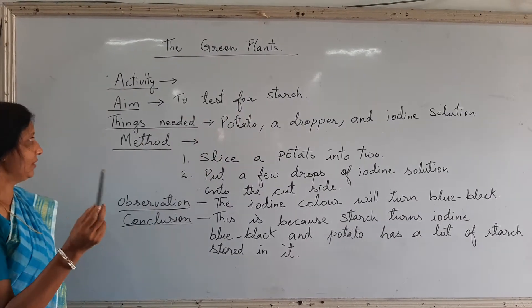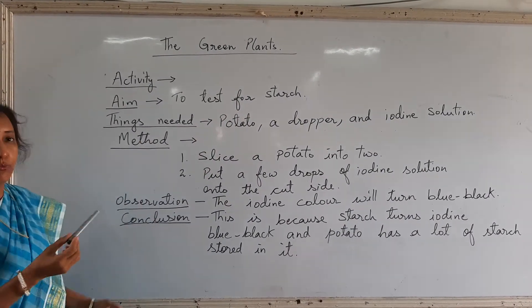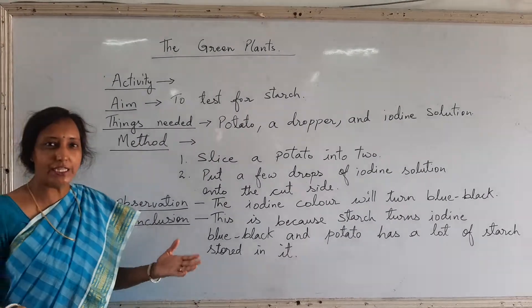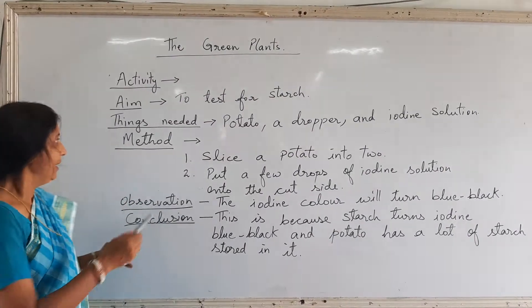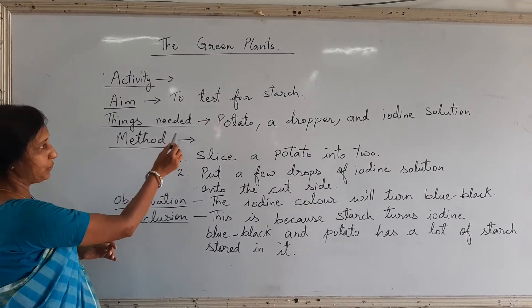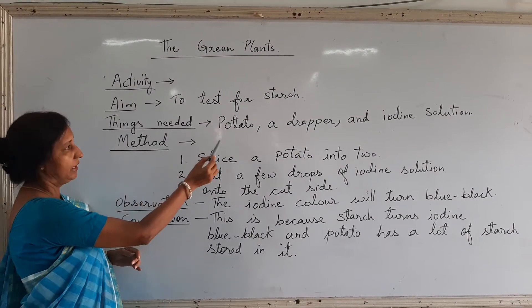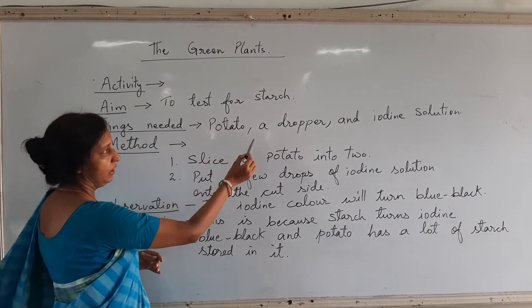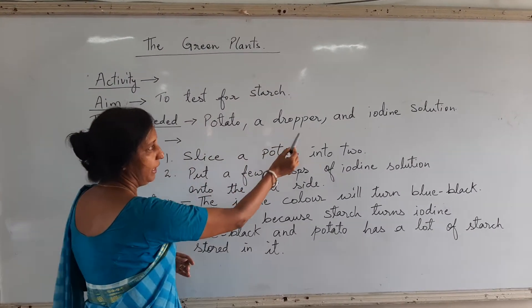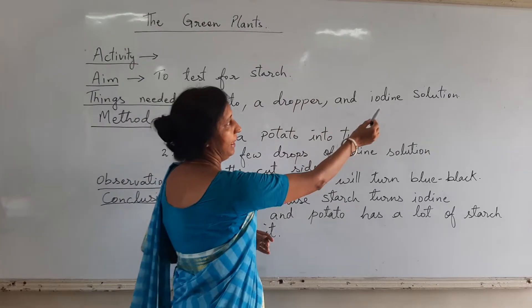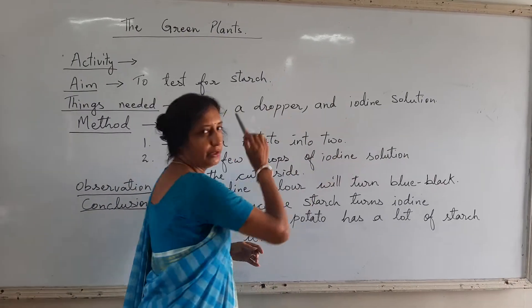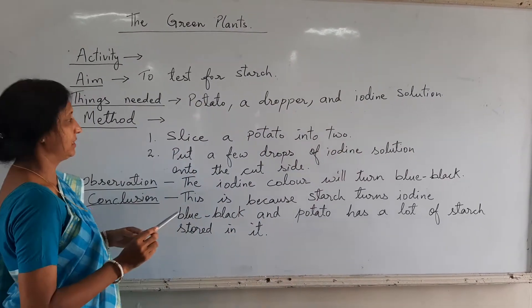So children, let's see what things we need for the activity. The things we need are a potato, a dropper, and an iodine solution.